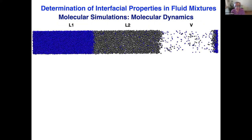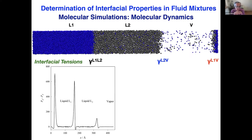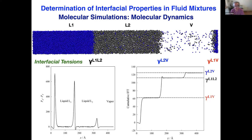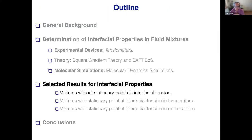For the liquid-liquid-vapor case, we have three different interfacial regions: liquid one-liquid two, liquid two-vapor, and liquid one-vapor. In this case, the only route we can apply is the Kirkwood pressure tensor, where the normal and tangential pressures can be seen in the figure, and by integration we obtain the different values for the surface tension. With these three different approaches, we can describe the interfacial properties for several mixtures.